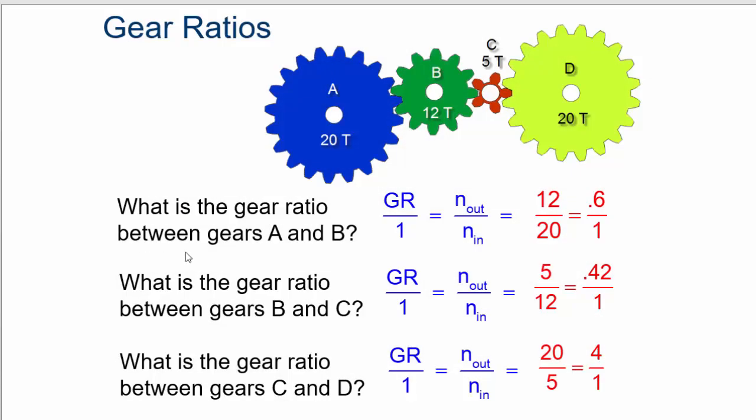Here's a great example. So here's a gear train where there are four gears in a row. How do you determine what the gear ratio is? We can do between A and B, and so that would be number of teeth out over number of teeth in, 12 teeth over 20 teeth, and that's 0.6 to 1. Then for B and C, you can figure out what it is for B and C. It comes out the same way, 0.42 to 1, and from C to D, it's 4 to 1.